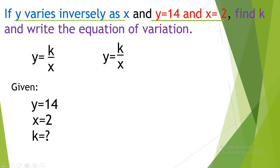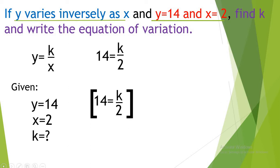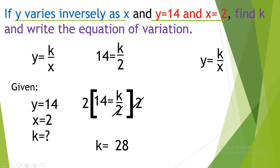We use the multiplication property of equality and multiply both sides by 2 to cancel the denominator. So 14 times 2 is equal to 28, meaning the constant of variation K is equal to 28. Now we can write the equation of variation: from Y is equal to K over X, we substitute K with 28. So the equation of variation is Y is equal to 28 over X.